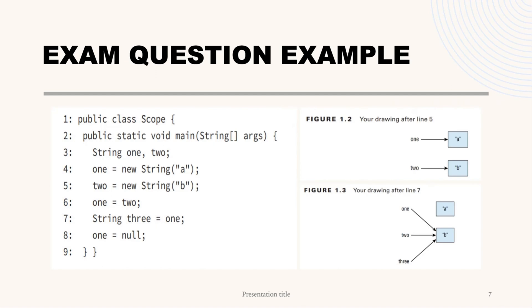On line 6, variable 'one' changes to point to 'b', so erase or cross out that arrow from 'one' and draw a new arrow from 'one' to 'b'. On line 7 we have a new variable: write 'three' and draw an arrow from 'three' to 'b'. Notice that 'three' points to what 'one' is pointing to right now, not what it pointed to at the beginning — this is why drawing pictures helps. At this point your work should look like this diagram.